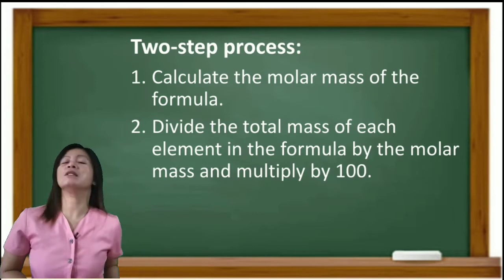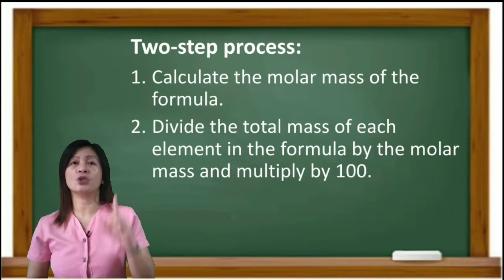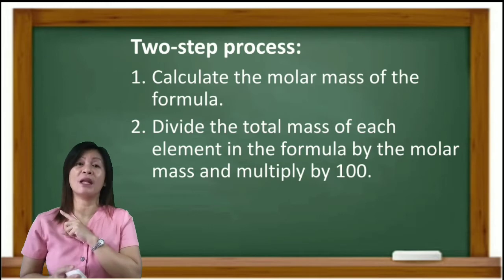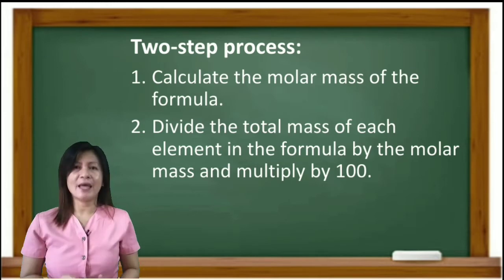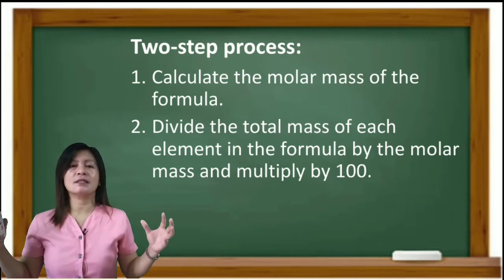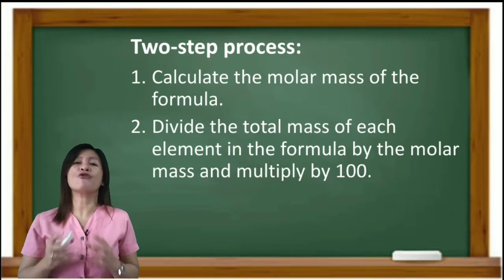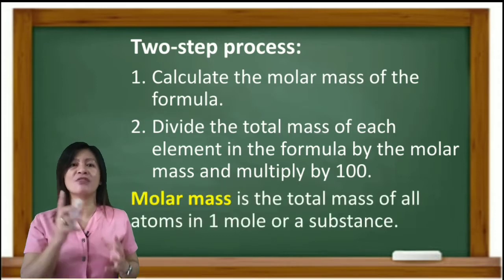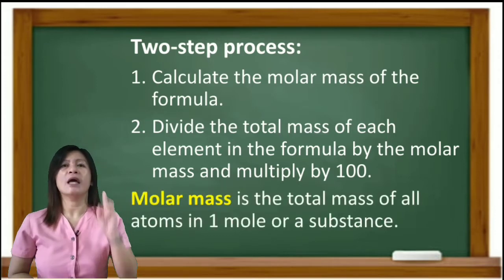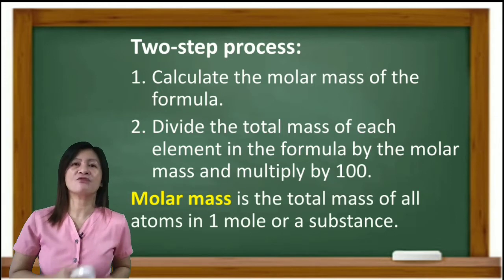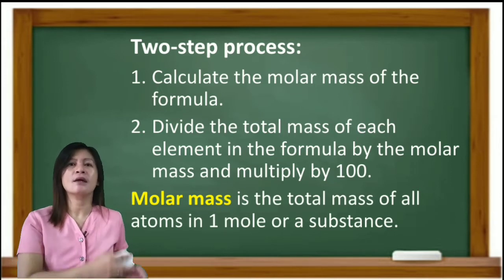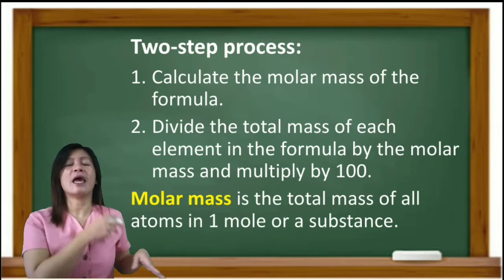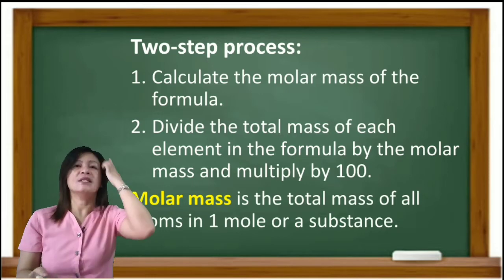There are two steps in calculating the percent composition. Step one: calculate the molar mass of the formula. Molar mass is the total mass of all the atoms present in a molecule or in one mole of that compound. Step two: divide the total mass of each element in the formula by the molar mass and then multiply by 100.